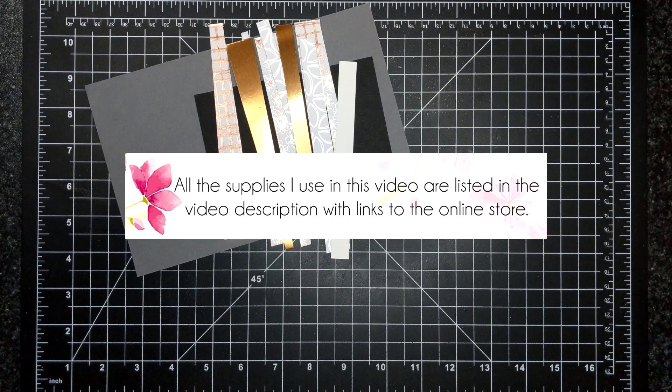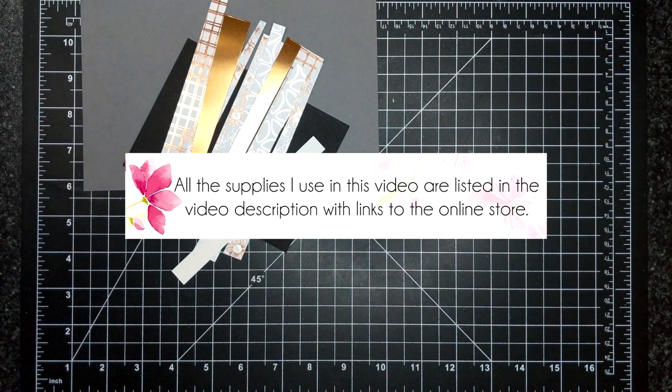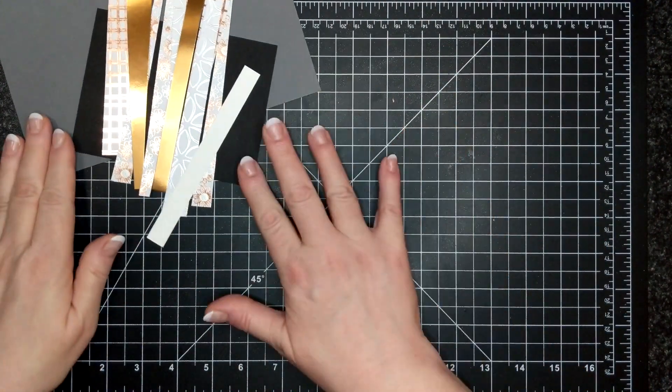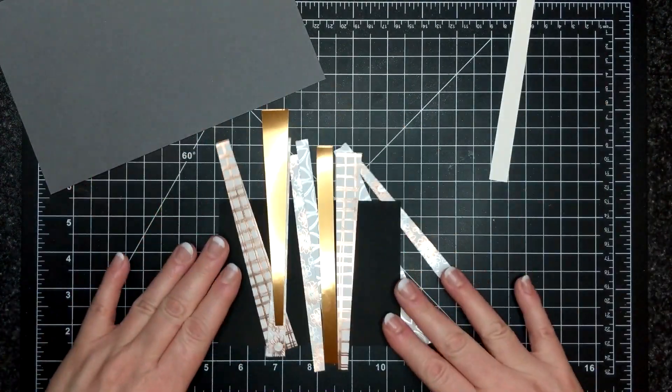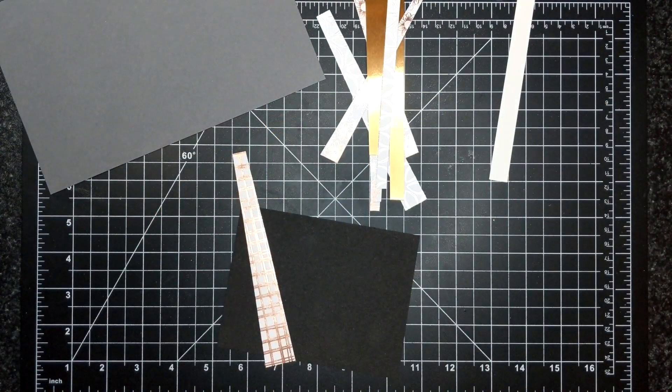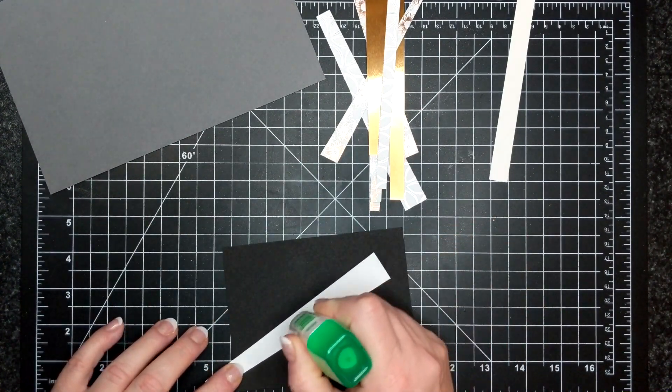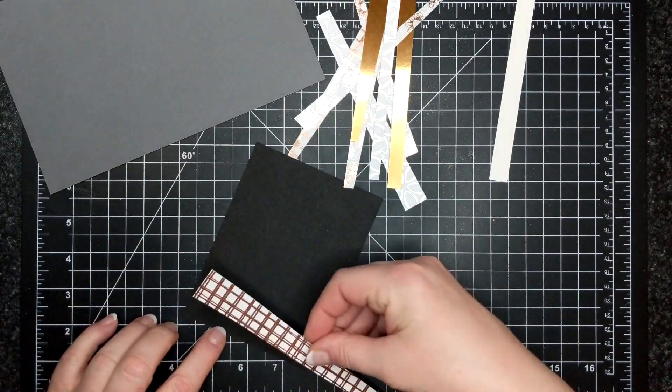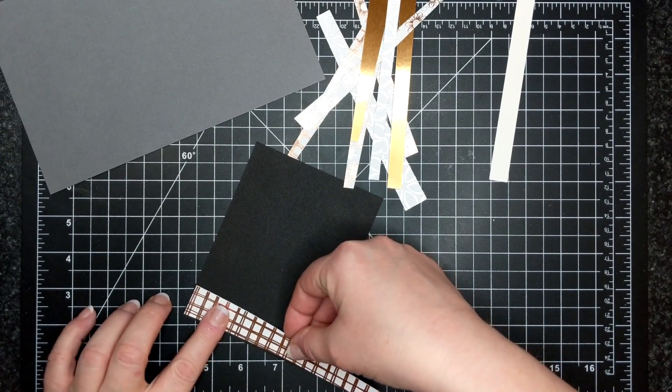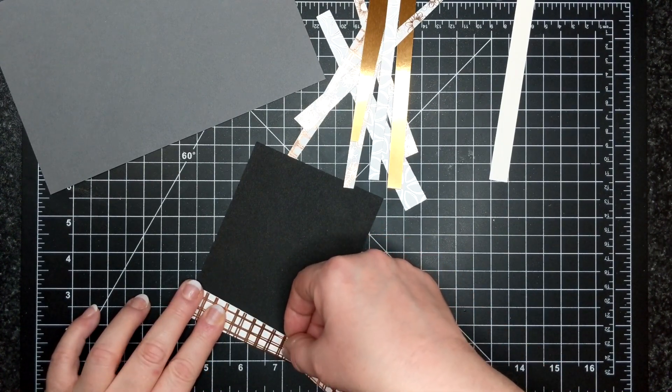For this month's card kit I am using the flowering foil specialty designer series paper. You can't get this paper anymore because celebration is over. I am using the technique called scrappy strip technique that was invented by Bruno Bertucci.